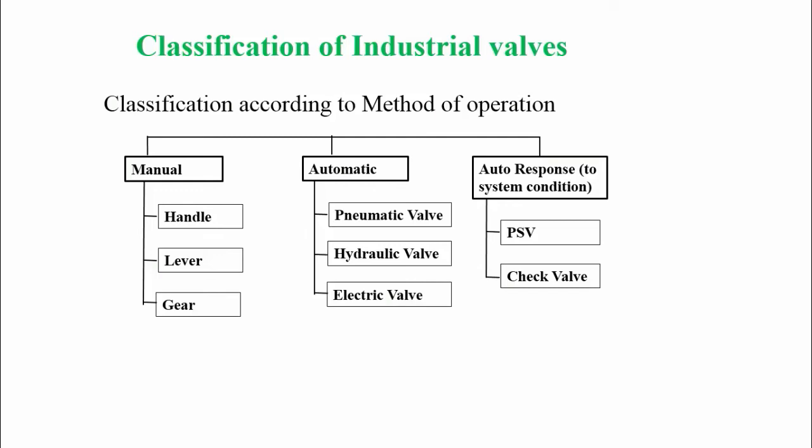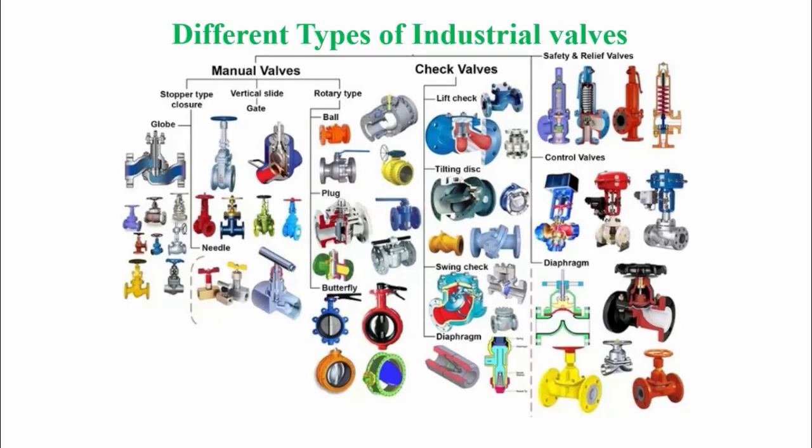Now the question is: what is the difference between automatic valve and auto-response valve? An automatic valve operates when it receives a signal. An auto-response valve responds to work according to the system condition. This picture gives you a clear idea of all types of industrial valves.